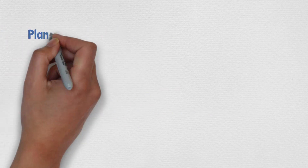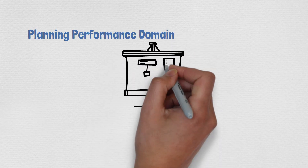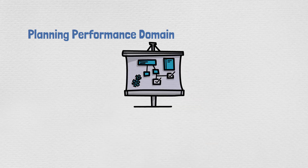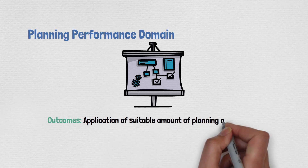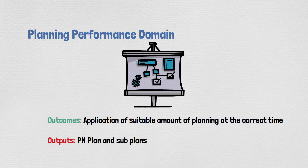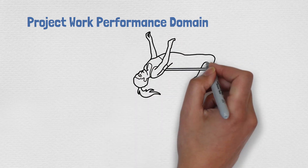The Planning performance domain addresses the activities and functions associated with the initial, ongoing, and evolving organization and coordination necessary for delivering project deliverables and outcomes. Applying the suitable amount of planning at the correct time is the key outcome. The outputs from PMBOK 6 are all about the sub-plans that you worked with.